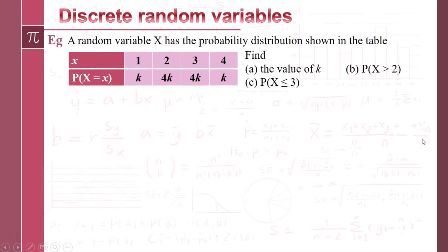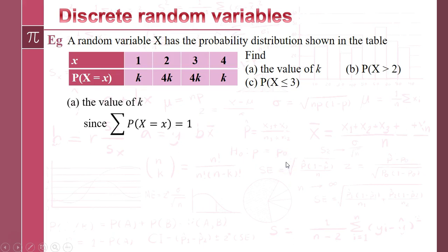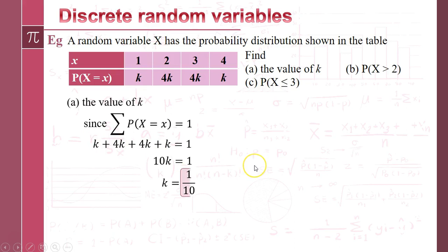Let's have a look at a problem involving discrete random variables. We've got a random variable X with a probability distribution shown in the table in terms of some value k. The first job is to work out what that value of k is. We use the fact that the sum of the probabilities is 1. Adding up all the probabilities gives us 10k equals 1, so k equals 1/10.